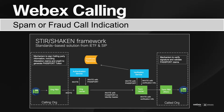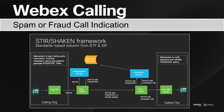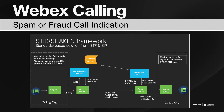service providers are implementing STIR/SHAKEN in their networks. STIR/SHAKEN are standards that define procedures to authenticate and verify caller identification for calls sent over the Internet Protocol network. This works with certificates and tokens. For now, the anti-spam calling is enabled in the United States and Canada. It will be expanded as more countries approve the STIR/SHAKEN framework.